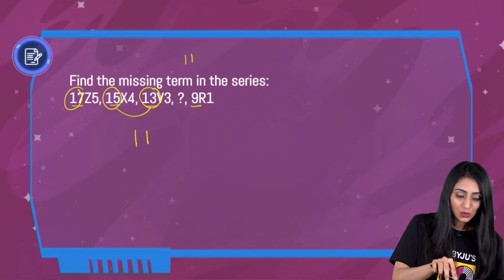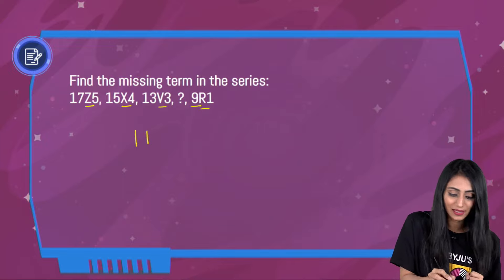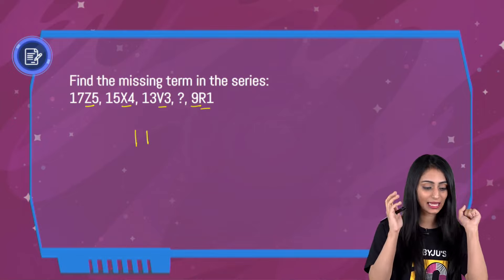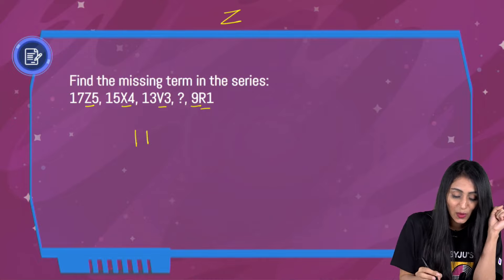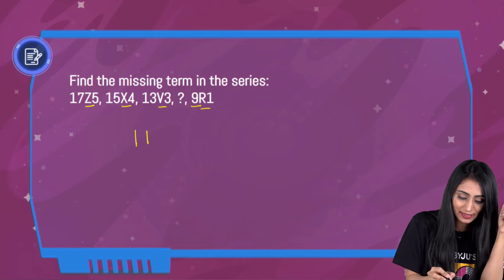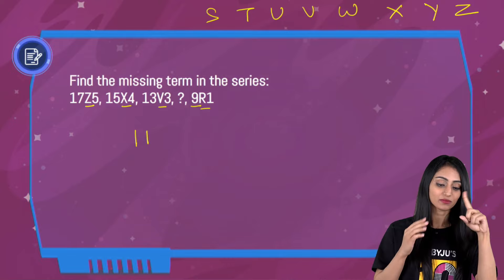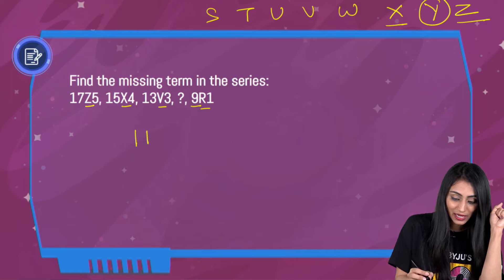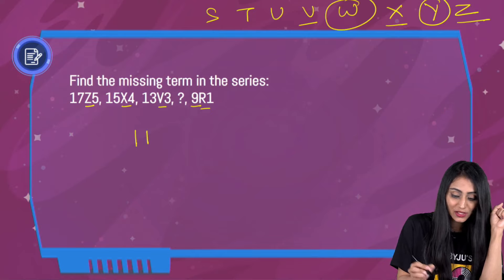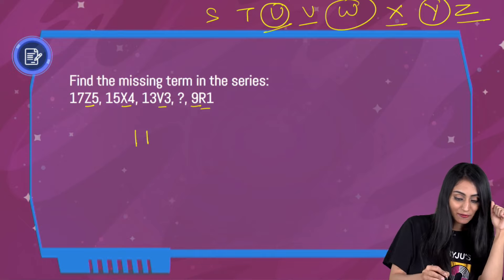Now comes the letter part. Carefully observe this: we have Z, then X, then V, we don't know the missing letter, and then R. Out of the options, that was S and T — it's definitely amongst S and T only. If I write the alphabet in reverse order, we have: S, T, U, V, W, X, Y, Z. So between Z and X, Y is missing. After X we have V, so W is missing there. And after V, U should be missing. So U is missing in the series, which means T will come in the missing position.